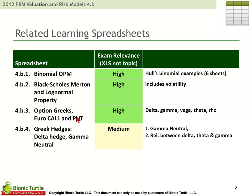4B3 is a large workbook because it has a full set of the option Greeks — one set for a European call, one set for a European put. So you can see structurally they're all similar, but the behavior of the different option Greeks is different. They're all collected here in these spreadsheets.